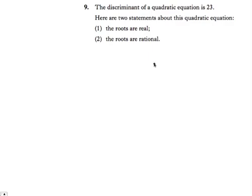This is question 9, paper 1, 2011 higher maths. We're told that the discriminant of a quadratic equation is 23 and we have to decide whether these statements are true or false.